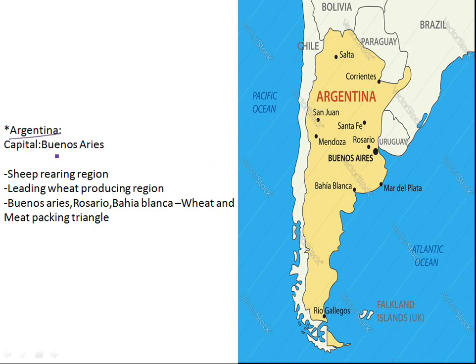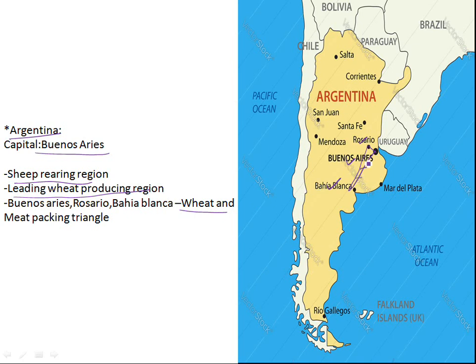The last country is Argentina, with the capital Buenos Aires. It is a major sheep rearing region and also the leading wheat-producing region. There is a triangle formation involving three areas — Buenos Aires, Rosario, and Bahía Blanca — which together are major in wheat and meat packing production.